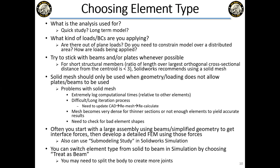You want at least two elements through the thickness — some say three. It doesn't always matter if the loading is purely axial, but for bending this is critical. The challenge with solid mesh is you have to go check all thin-walled areas and verify sufficient elements through the thickness, which can be complicated on complex parts.